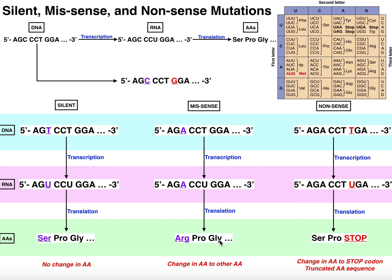But now I've mutated this cytosine into an adenine. What does AGA encode? Looking it up on the genetic code table: AGA is arginine. We've changed the amino acid — it's no longer serine, it's arginine. Any kind of mutation that changes the amino acid is called a missense mutation, because instead of the sequence serine, proline, glycine, I now have arginine, proline, glycine. I changed the identity of the amino acid to a different amino acid — therefore this is called a missense mutation.